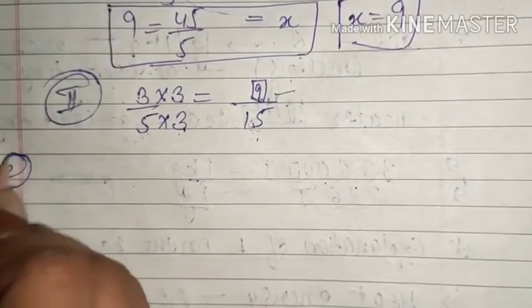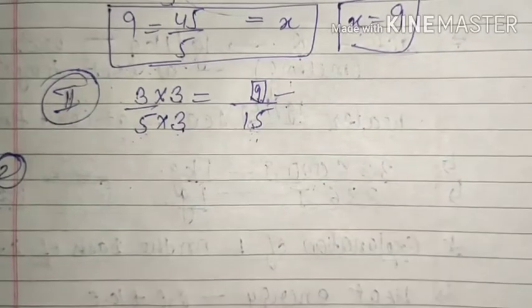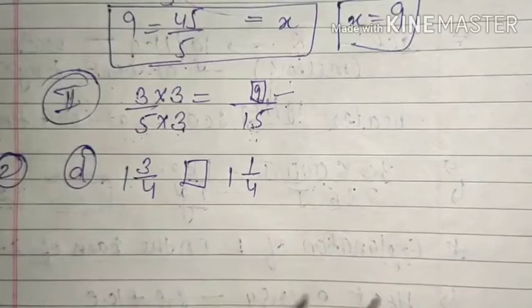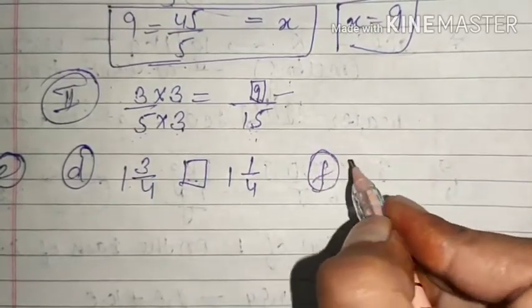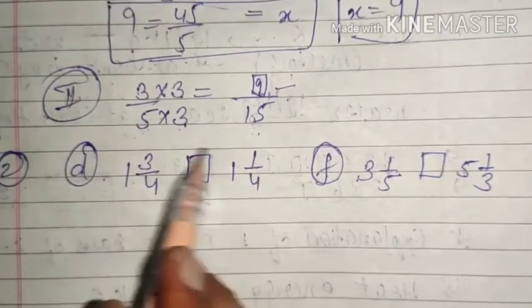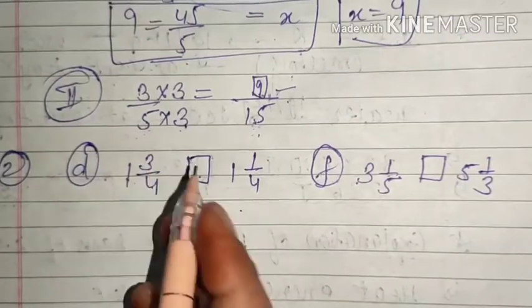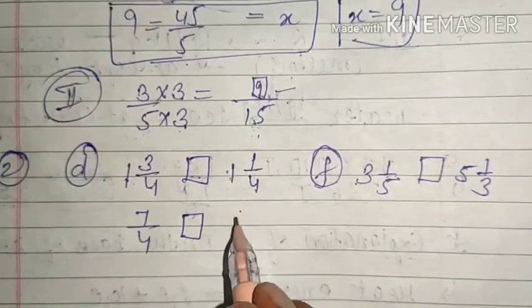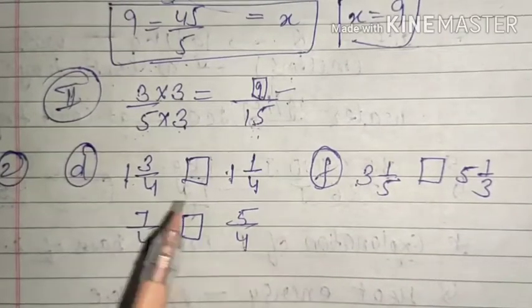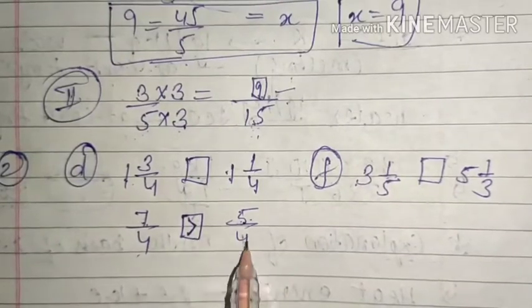Now we will see question number 2: put greater than or less than sign to compare the following fractions. I am solving part D, that is 1 and 3 by 4 versus 1 and 1 by 4. Whenever fractions are given as mixed fractions, our first step is to convert them into improper fractions. So: 1 into 4 is 4, plus 3 is 7, giving 7 by 4. And 1 into 4 is 4, plus 1 is 5, giving 5 upon 4. The denominators are same, so the fraction with the greater numerator is greater — 7 upon 4 is greater than 5 upon 4.